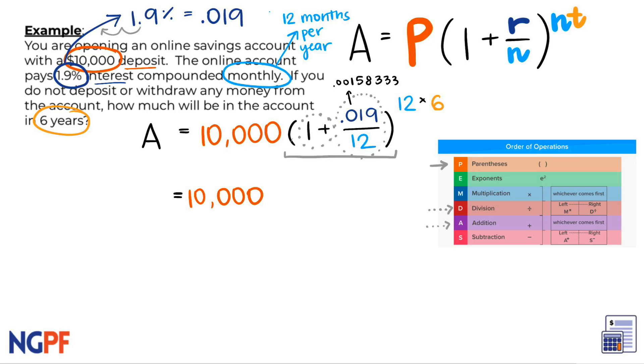Now that we have completed the division in the parentheses, we can now add the 1 within the parentheses, which gives us 1.00158333. To continue simplifying our equation, we can calculate 12 times 6, which gives us 72 for our exponent.